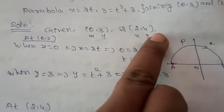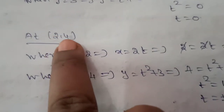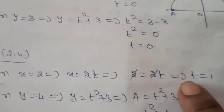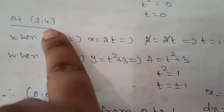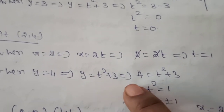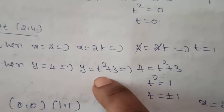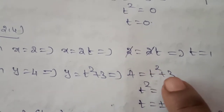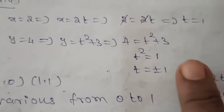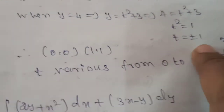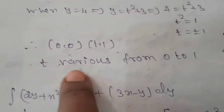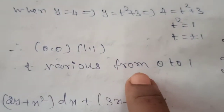At the second point (2, 4): when x equals 2, substitute into x equals 2t, giving 2 equals 2t, so t equals 1. For y equals 4, substitute into y equals t squared plus 3, giving 4 equals t squared plus 3, so t squared equals 1, t equals plus or minus 1. Taking the positive value only, second point gives t equals 1. Therefore t varies from 0 to 1.